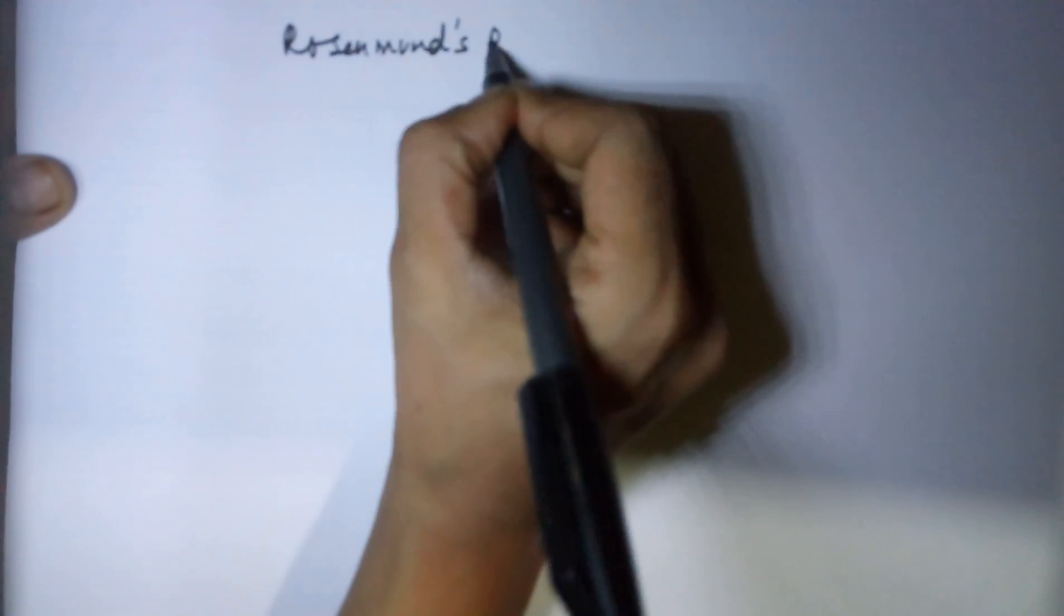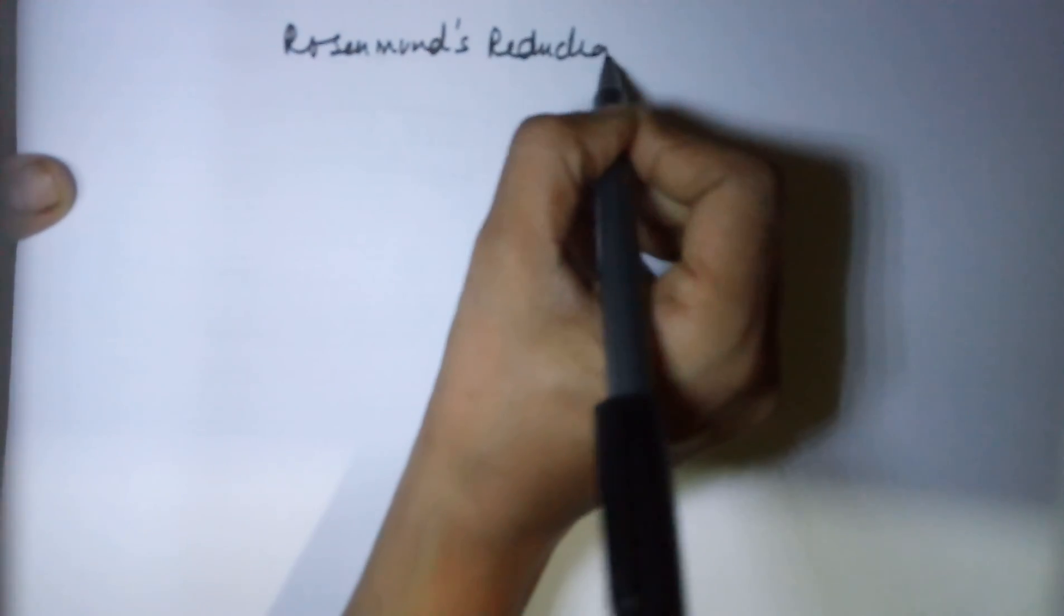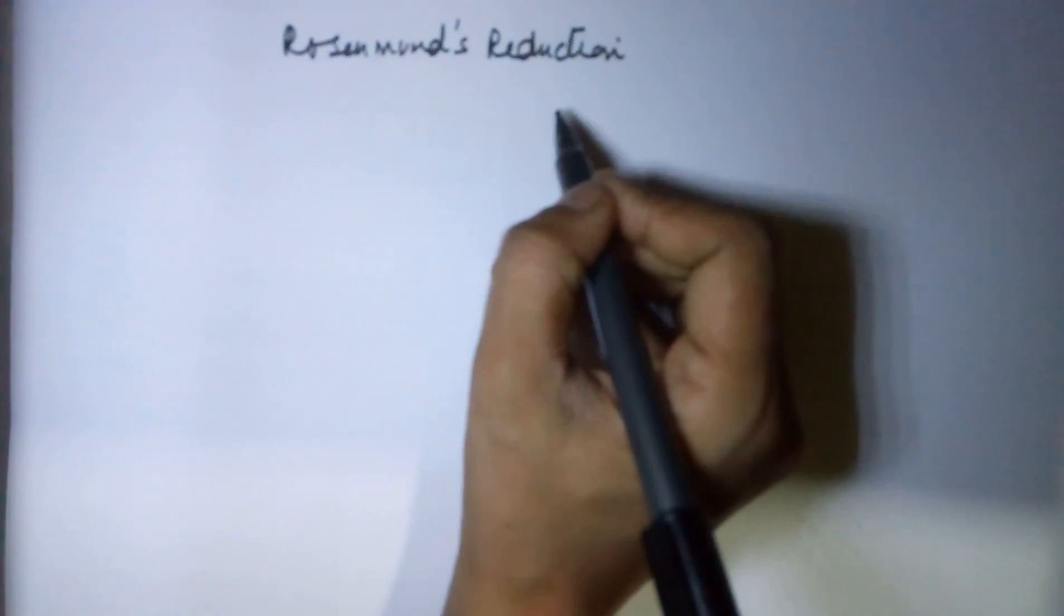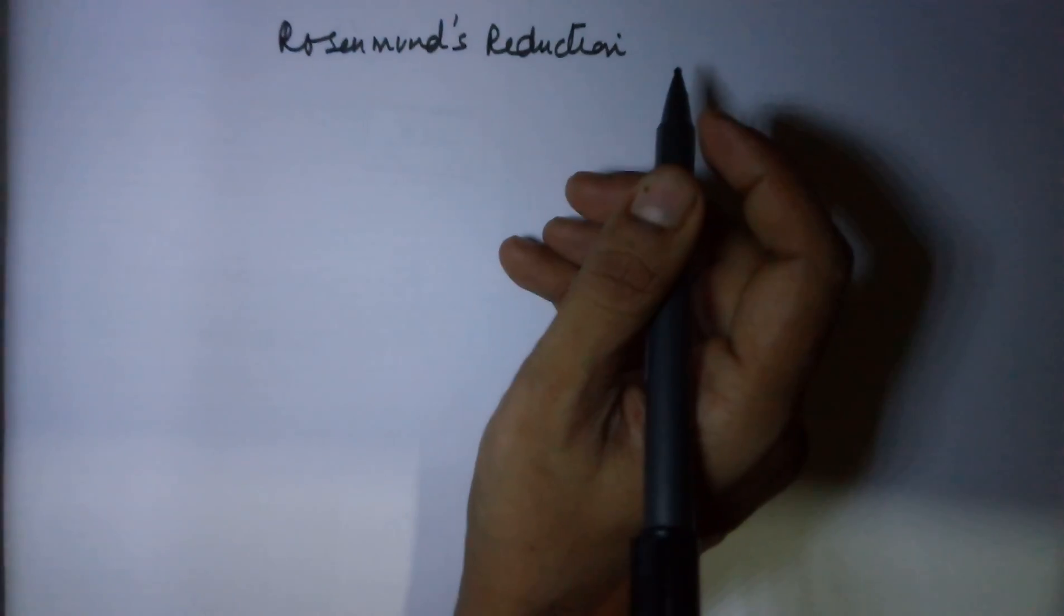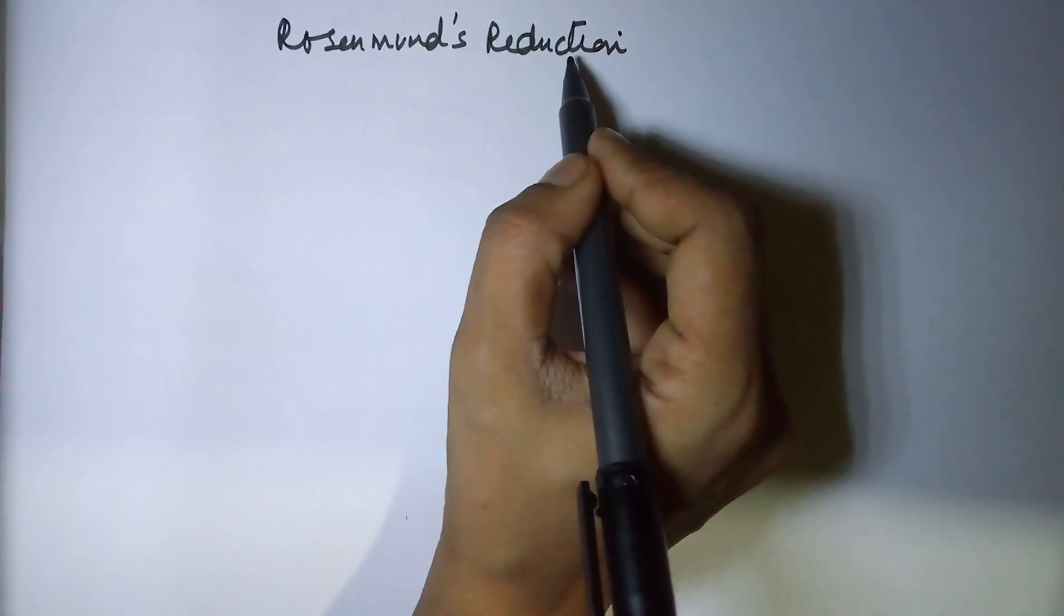Hello students, in today's class I'll be doing an important named reaction of acid chlorides. The name of the reaction is Rosenmund's Reduction. Rosenmund is the name of the person who did this reaction, whereas reduction means gain of hydrogen.